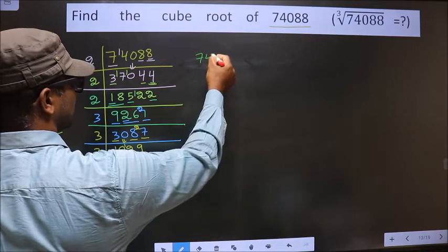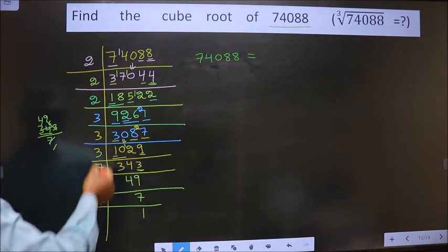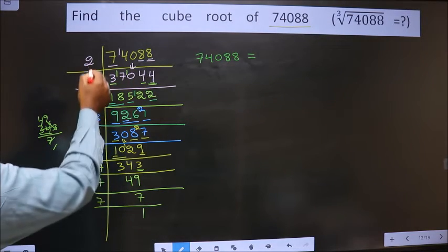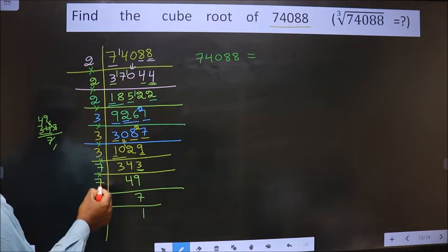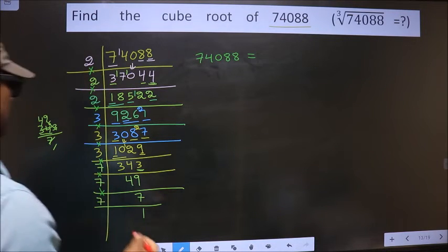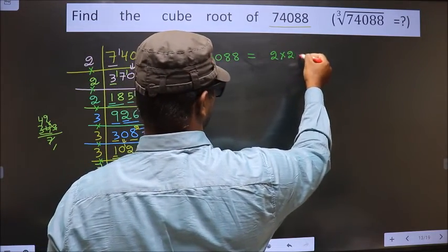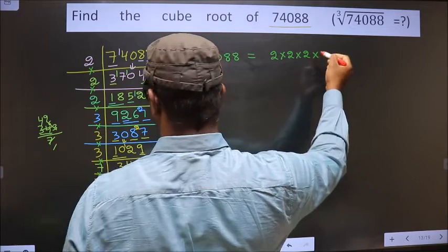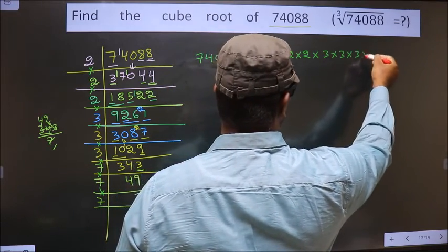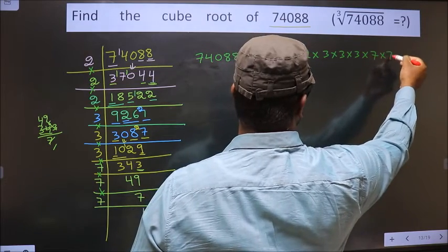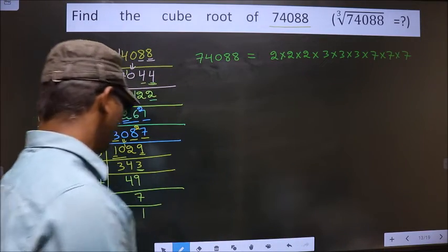So 74088 equals the product of 2×2×2×3×3×3×7×7×7.